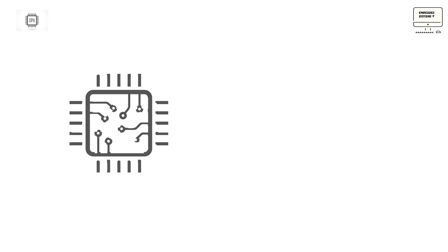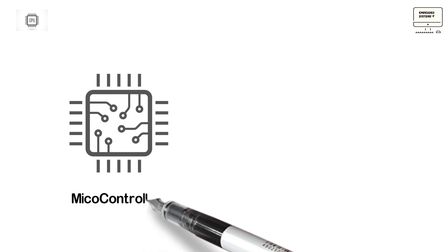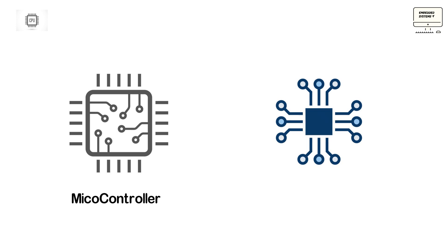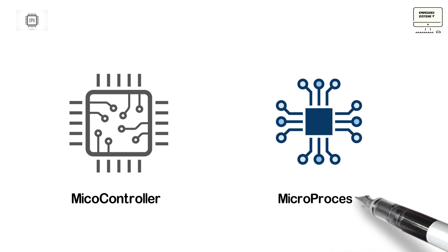You must always be confused about the difference between microcontroller and microprocessor. As we know, both are used in real-time applications and they share many features, so it seems to be the same — but it's not. Let's discuss them and discover the major differences between them.